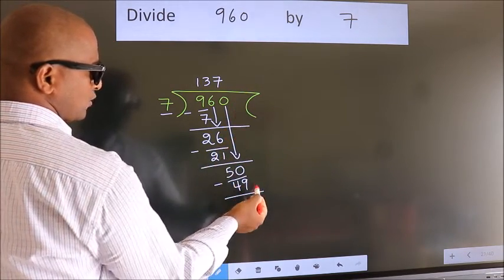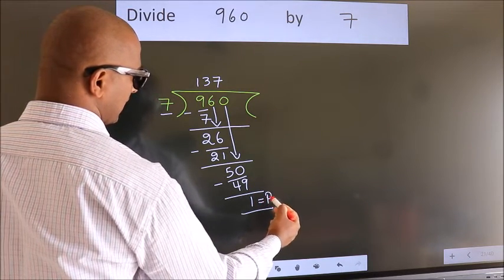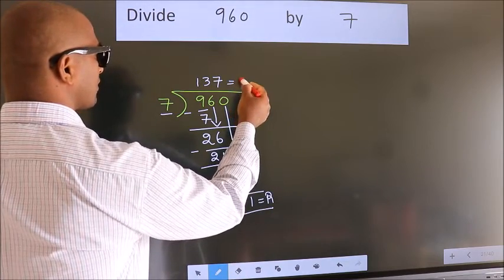No more numbers to bring it down. So, we stop here. This is our remainder. This is our quotient.